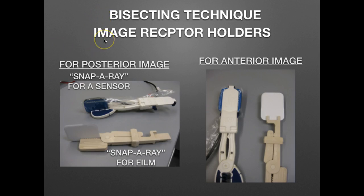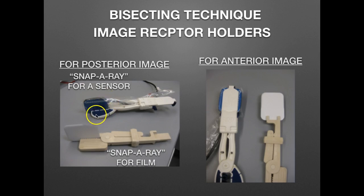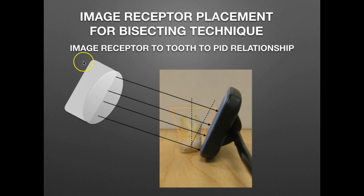For the bisecting technique, a popular image receptor holder is the Snap-A-Ray, available for both sensor and film, with posterior and anterior setups. One useful feature is a small blue line on the holder that indicates the edge of the sensor — visible when the patient smiles or you retract the lip or cheek. This confirms the sensor is positioned correctly. We always want to encircle our sensor with the PID to obtain an accurate image.